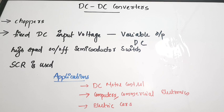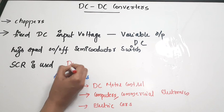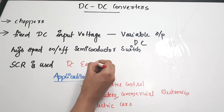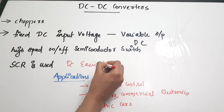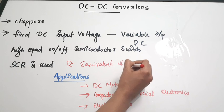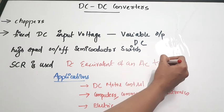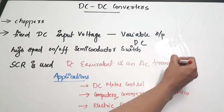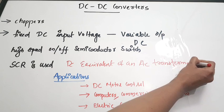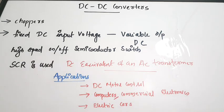A chopper can actually be considered as the DC equivalent of an AC transformer. You can think of a chopper in that way — it is the DC equivalent of an AC transformer.